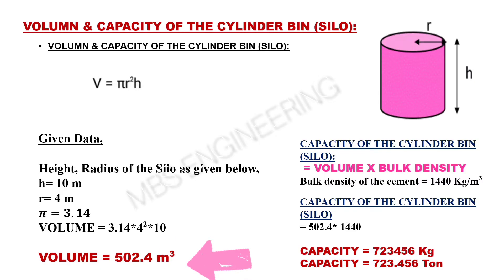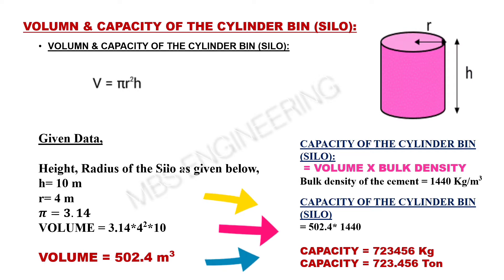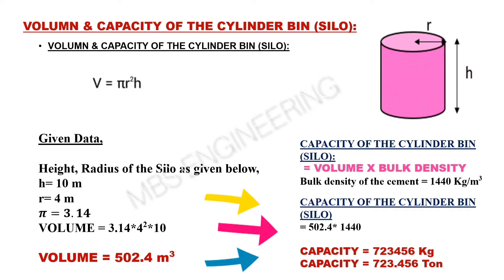Next, we learn about how to calculate the capacity of the cylinder bin or silo. Volume is multiplied by bulk density. Assuming the bulk density of cement is 1,440 kilograms per cubic meter, 502.4 multiplied by 1,440. The cylinder bin or silo has a capacity of 723,456 kilograms, or 723.456 tons.